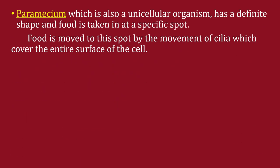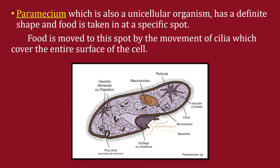Paramecium, also a unicellular organism, has a definite shape and food is taken in at a specific spot. Food is moved to this spot by the movement of cilia, which cover the entire surface of the cell. The small hair-like structures visible across the cell are cilia, and food is pushed inside through them.